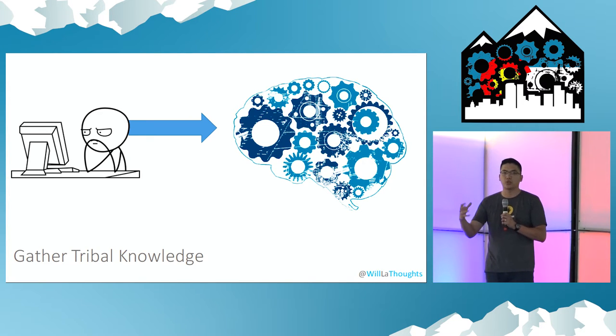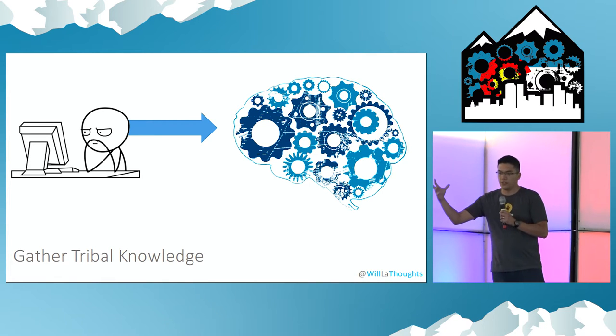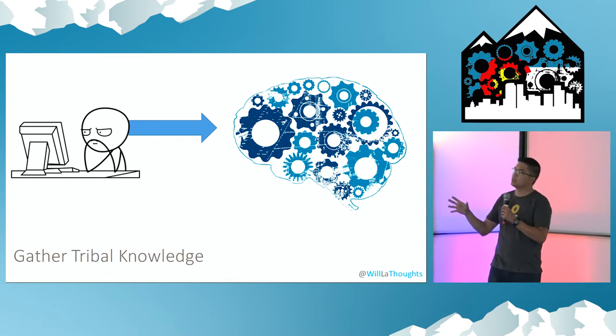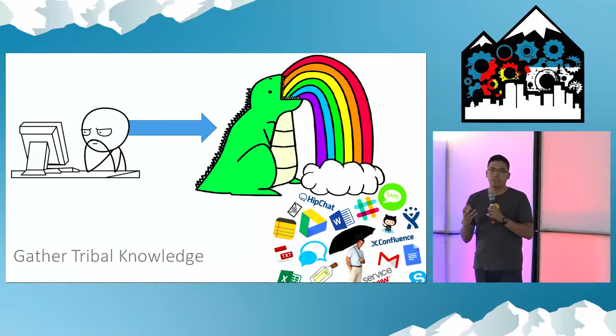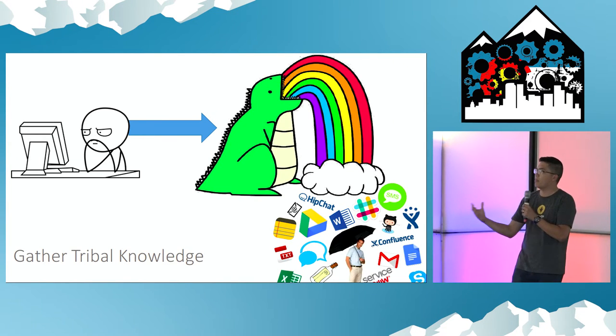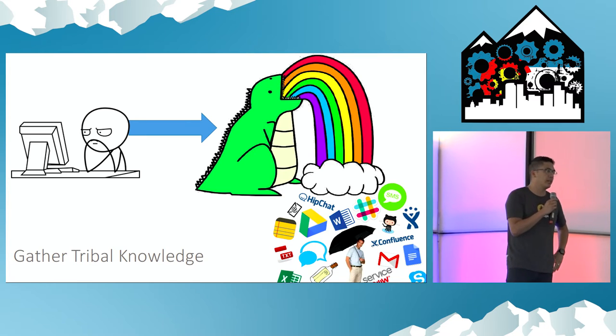So the first step is to gather all that tribal knowledge. All your dev guys, all your ops guys are insanely smart, and all that stuff is churning in their minds. You're trying to rip that knowledge and get them to throw it up and put it into somewhere where we can capture it digitally. So you have Slack, you have HipChat, you have email going back and forth. Anything that's textual that allows you to copy it and at least put it somewhere so that you have what you would call a minimum viable runbook in place.